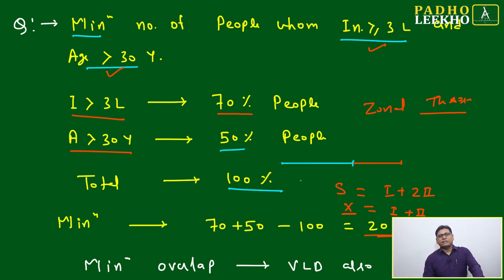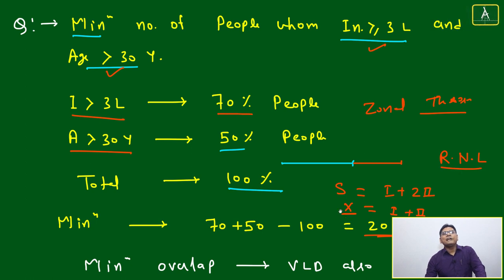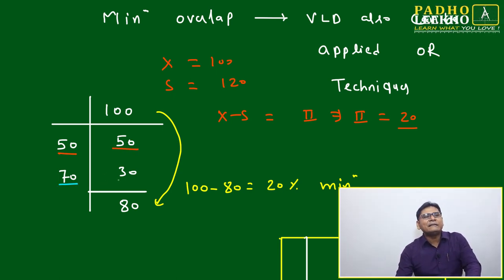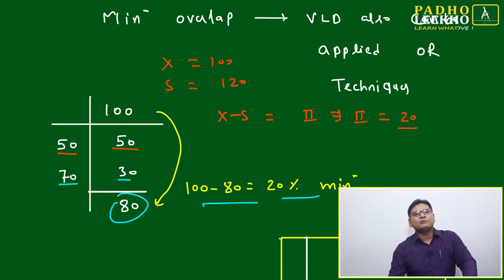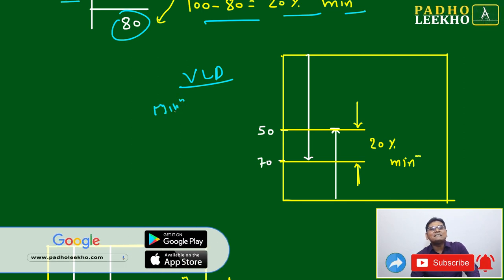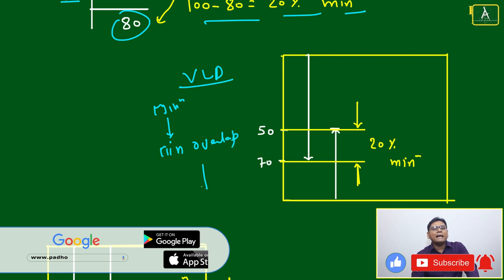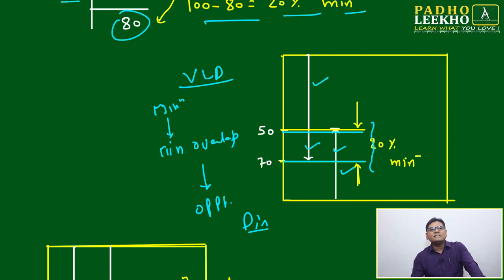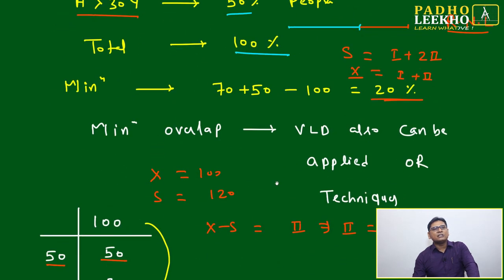Using the VLD — Vertical Line Diagram — to understand: total is 100, age more than 30 is 50, so 100 - 50 = 50 left out; income more than 3 lakhs is 70, so 100 - 70 = 30 left out; 50 + 30 = 80, and 100 - 80 = 20% minimum. For minimum overlap, place the lines from opposite directions — the overlapping zone gives 20%. I have given four or five techniques to understand this question.